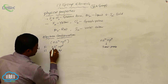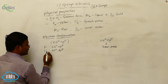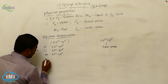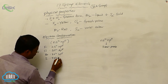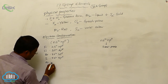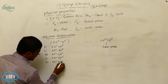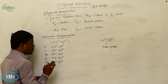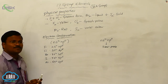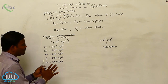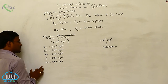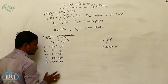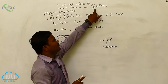The valence shell electron configuration of fluorine is 2s² 2p⁵. For chlorine, it is 3s² 3p⁵. For bromine, 4s² 4p⁵. For iodine, 5s² 5p⁵. For astatine, 6s² 6p⁵. From top to bottom in the group, the principal quantum number changes from fluorine to astatine. How many valence electrons are present in each halogen element? Seven. Hence, it is called a 7A group element.